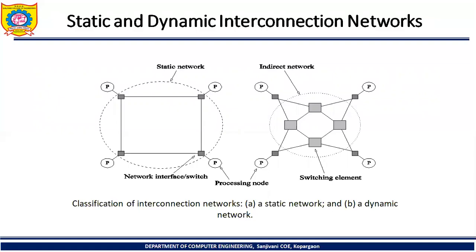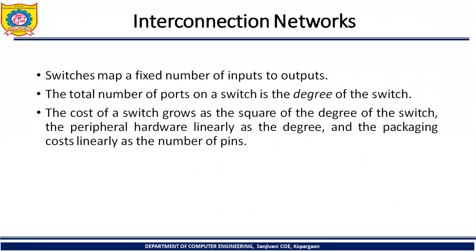These two types of interconnection networks are used in PRAM machines. It is very important to learn the topology of these parallel platforms. Switches map a fixed number of inputs to outputs. The total number of ports on a switch is the degree of that switch — for example, 8-port, 16-port, or 24-port switches. The cost of a switch grows as the square of the degree of the switch. Peripheral hardware scales linearly with the degree, and packaging cost scales linearly with the number of pins.